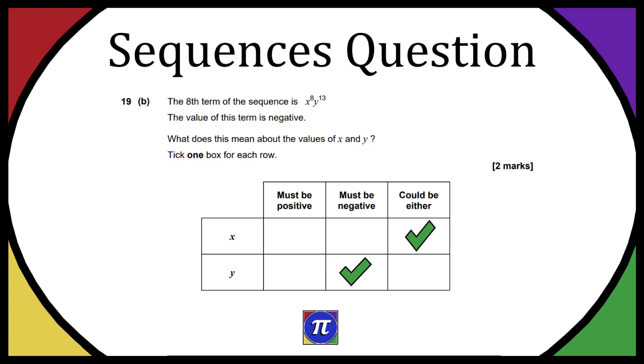For that reason y must be negative. And just to summarize quickly, we want x to the power of 8 to be a positive value and y to the power of 13 to be a negative value. And whenever you have x to the power of an even number, you're going to get a positive output no matter what. And when you have y to the power of an odd number, you're going to get a positive output if you put a positive input, but you will get a negative output if you put a negative input.